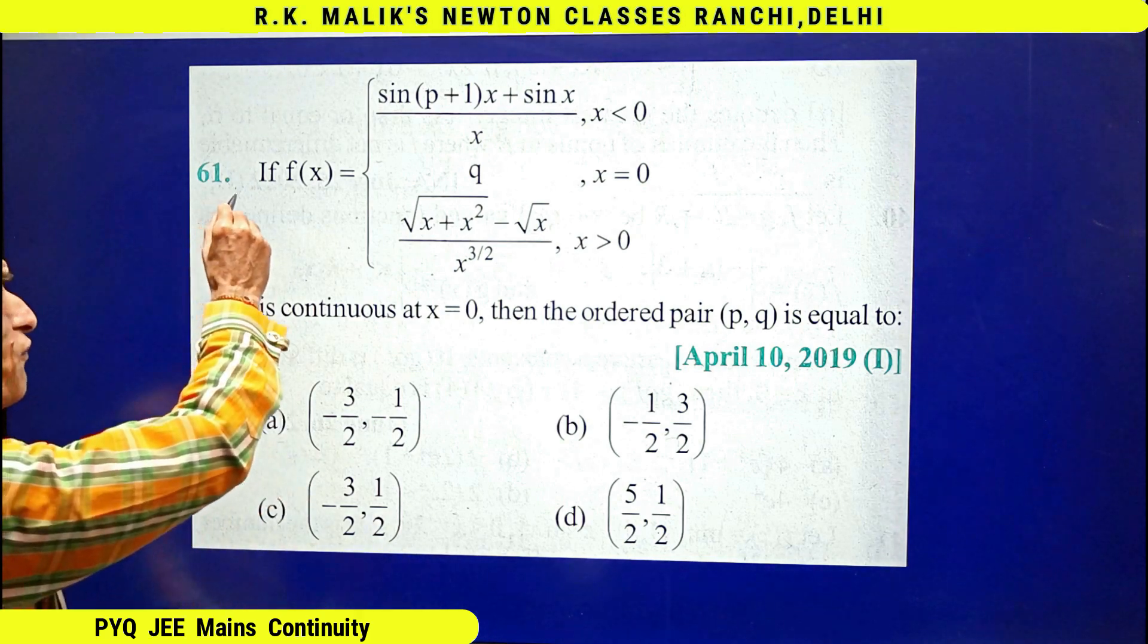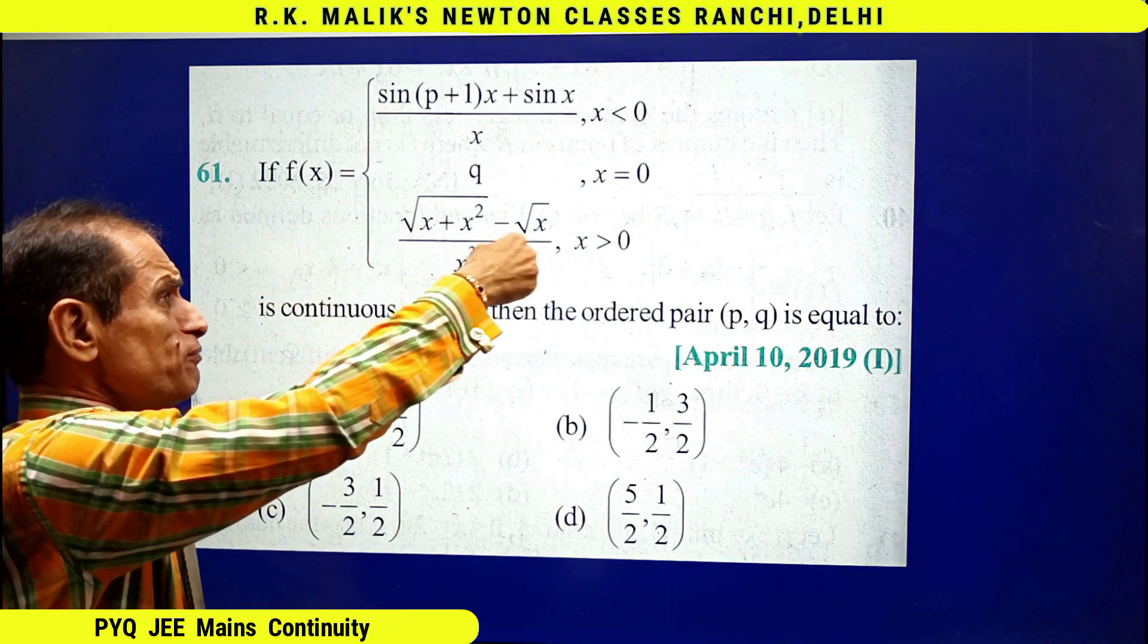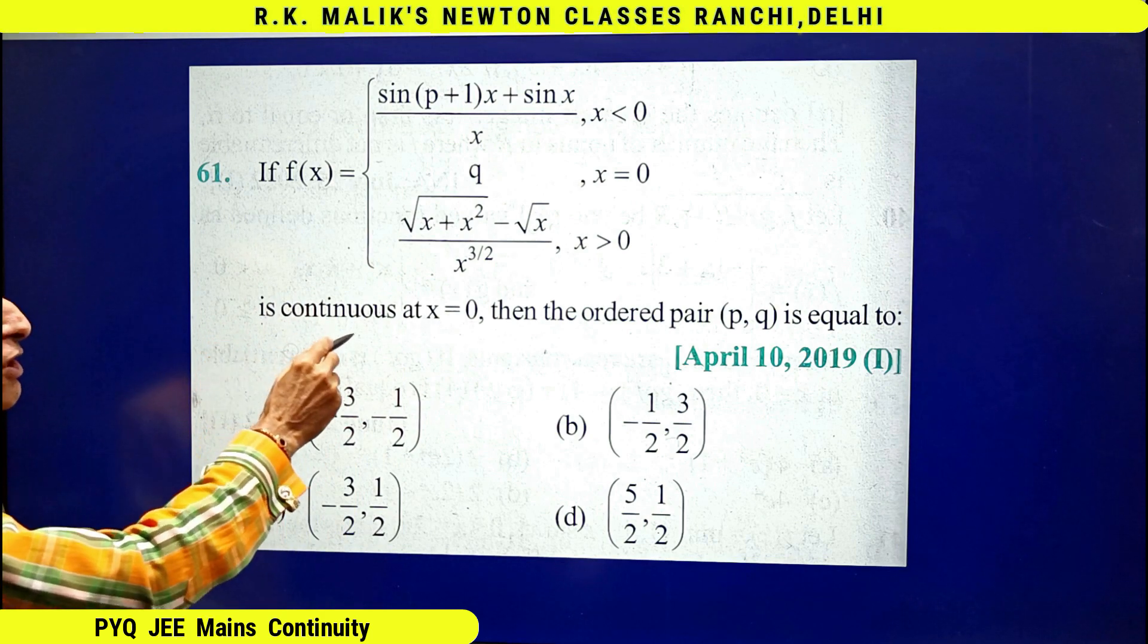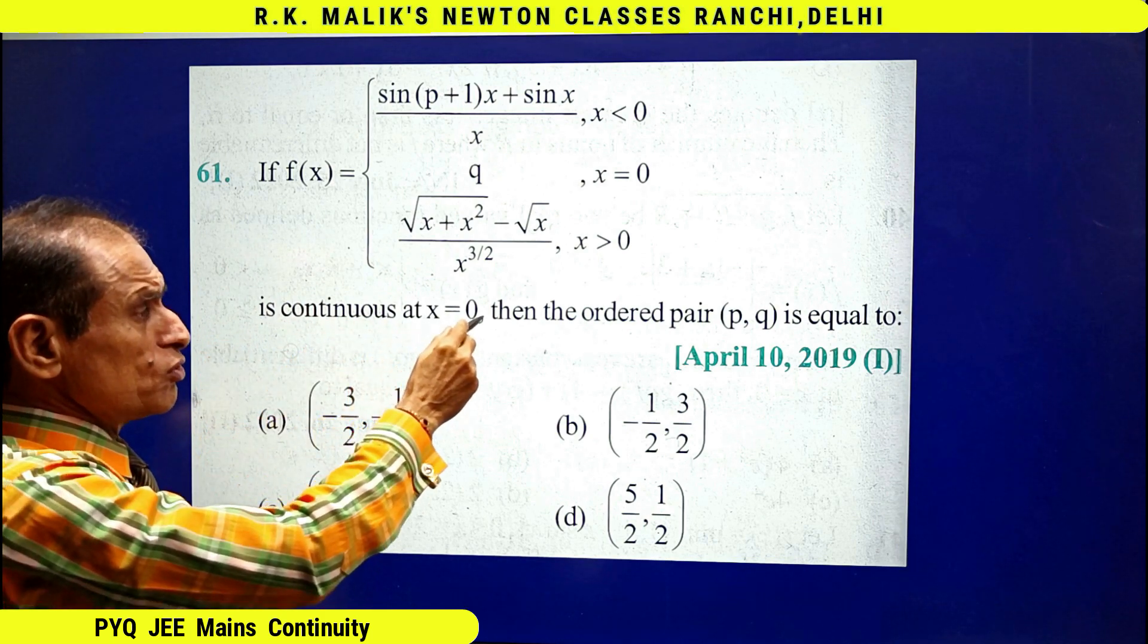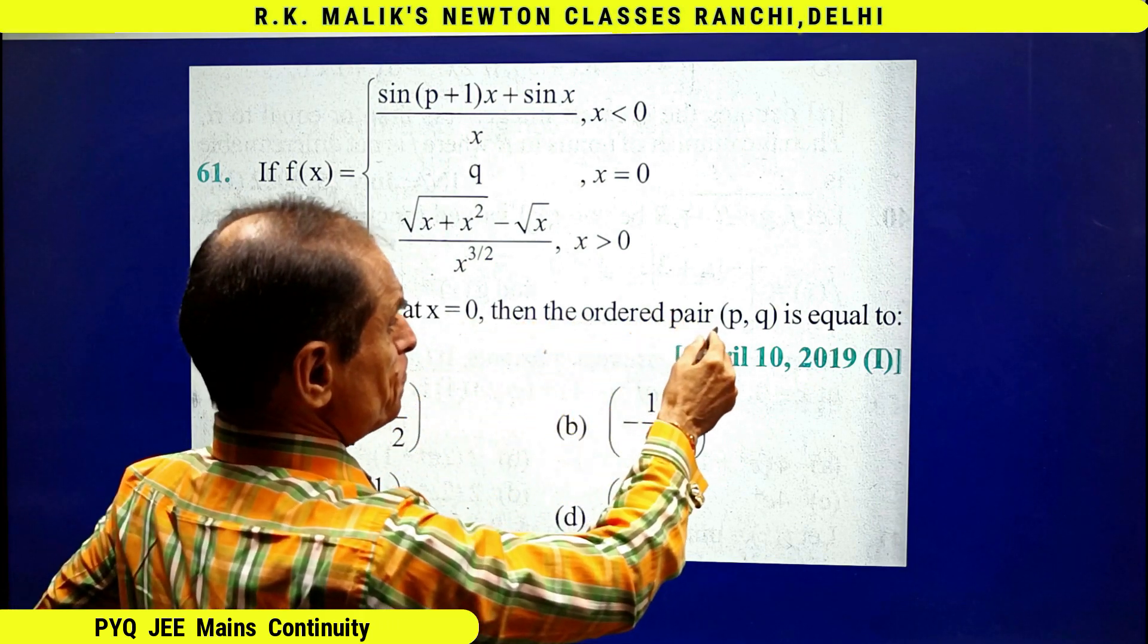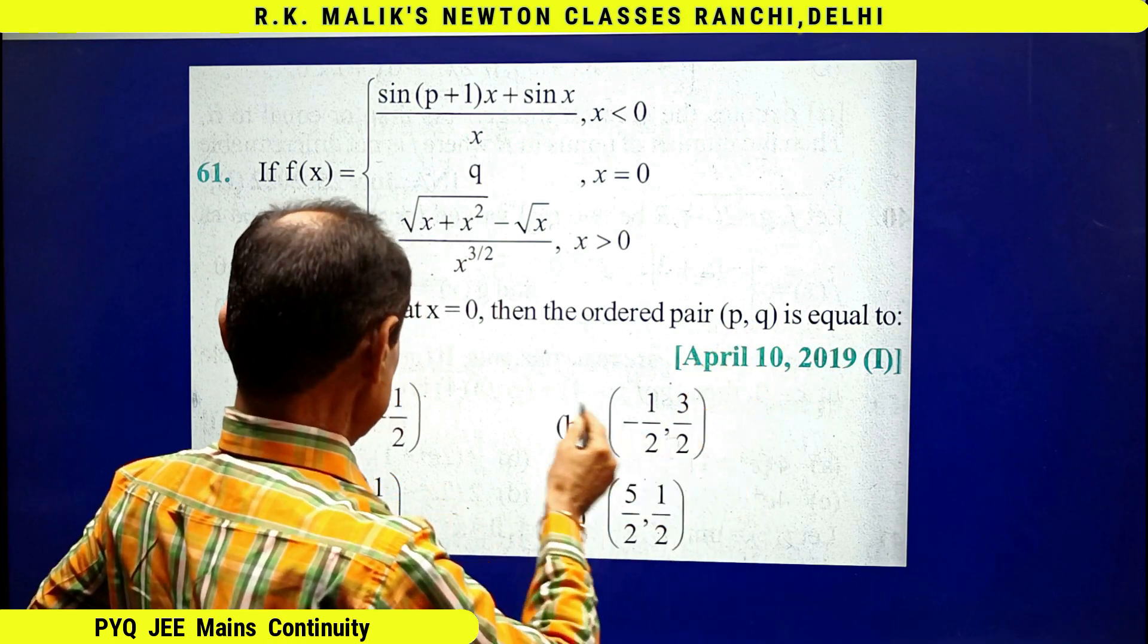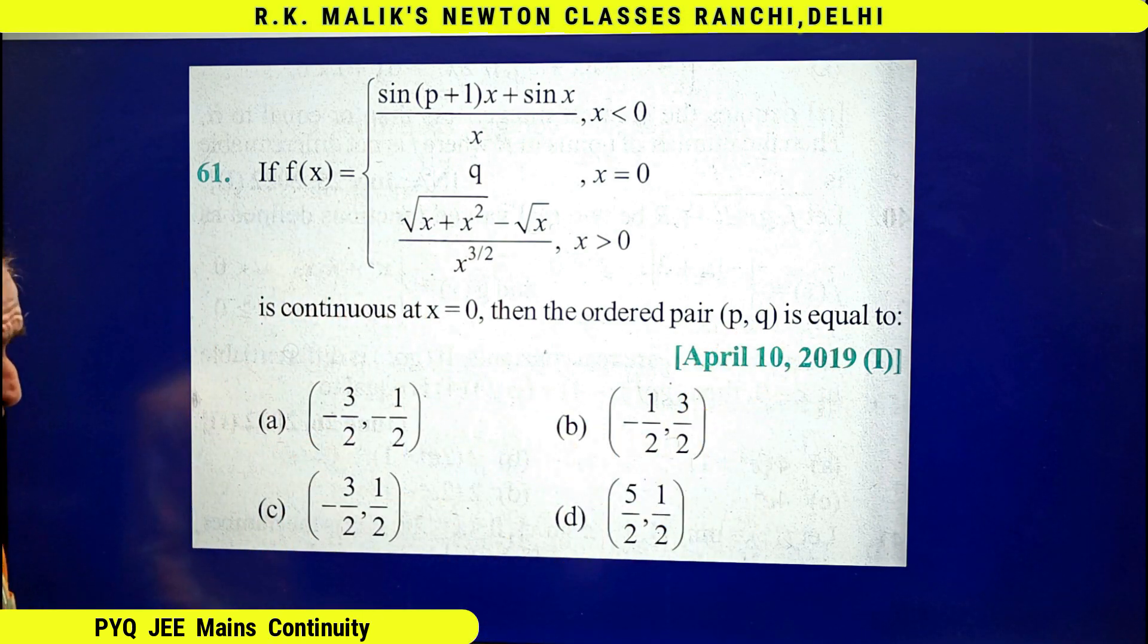In this question it is given that if f(x) is defined by this expression and is continuous at x = 0, then the ordered pair (p, q) is equal to what? You have to find the correct choice.